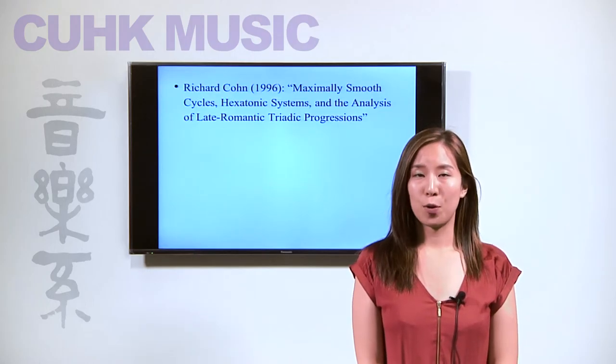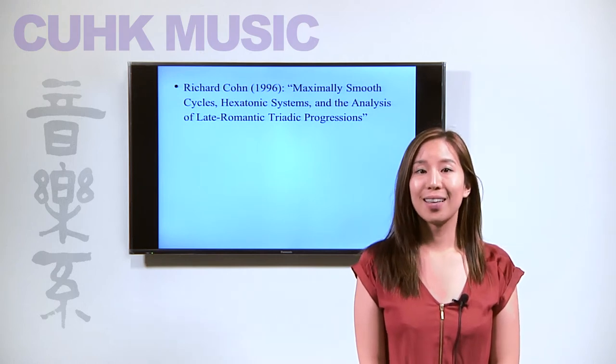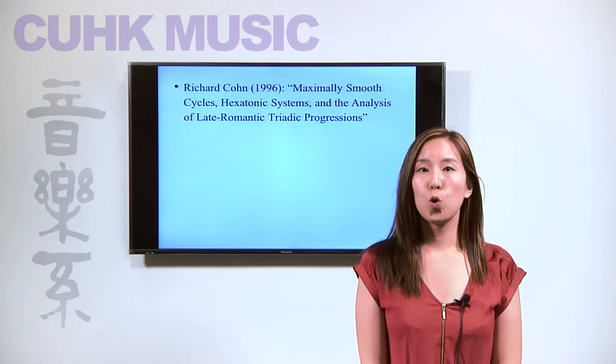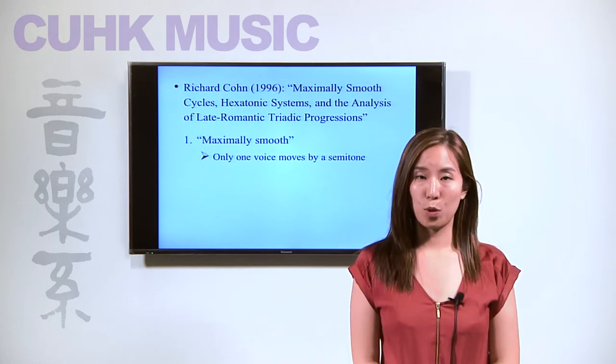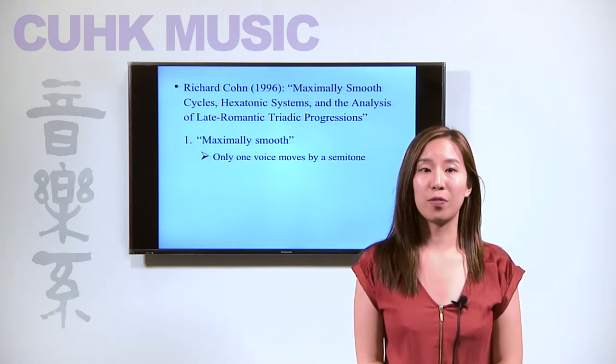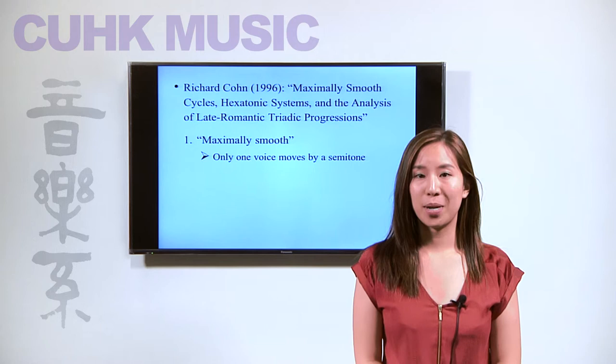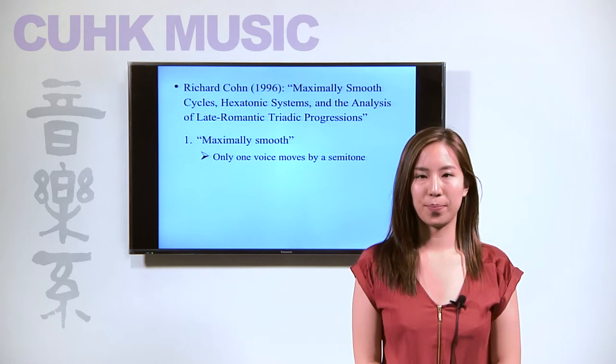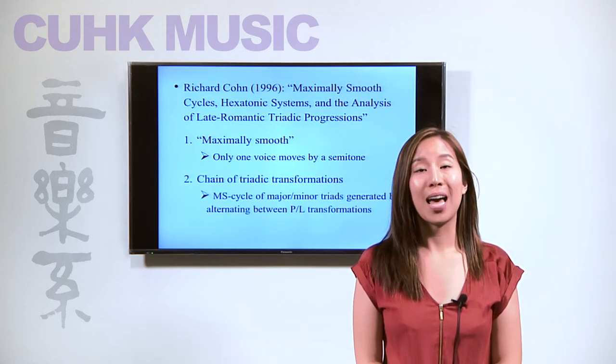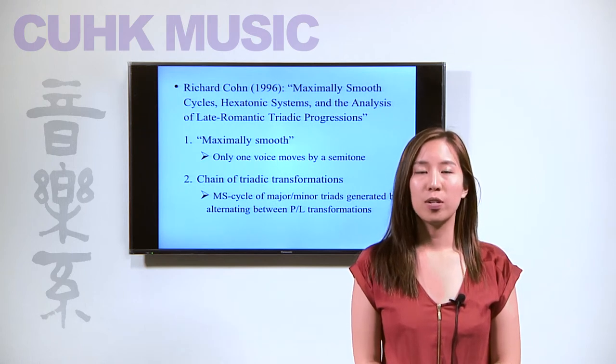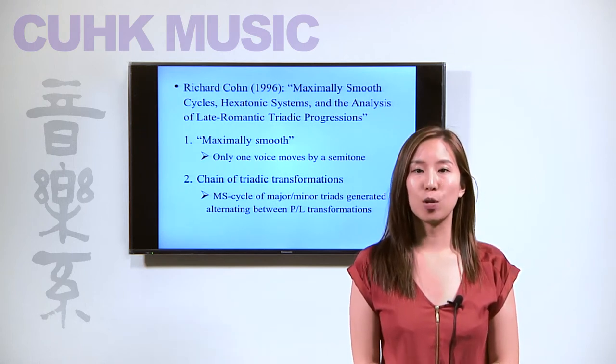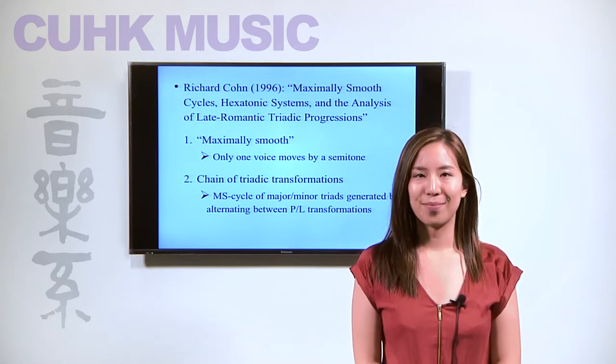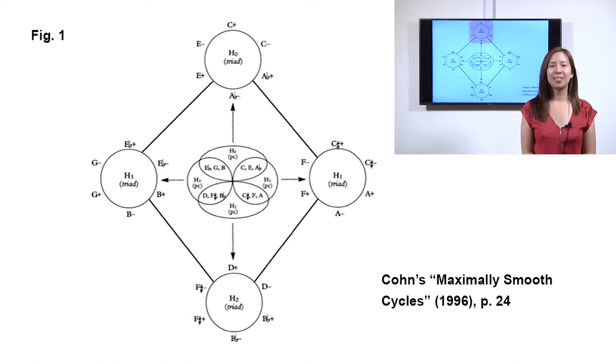Cohn theorizes further in this article the properties of the cyclic harmonic progression. There are two main attributes. First, maximally smooth means that there is only one voice moving and by a semitone in each transformation. Cohn refers to this as the maximal voice leading proximity. The second attribute concerns the application of triadic transformations to create a maximally smooth cycle, in short, an MS cycle.